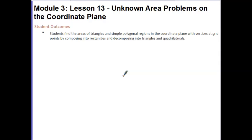Your outcomes for today's lesson are students find the areas of triangles and simple polygonal regions in the coordinate plane with vertices at grid points by composing into rectangles and decomposing into triangles and quadrilaterals.